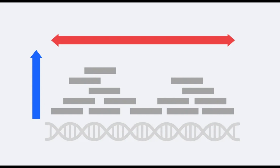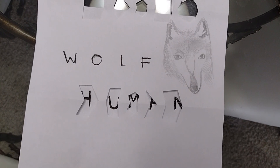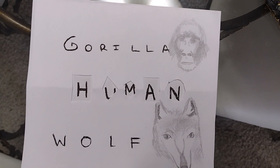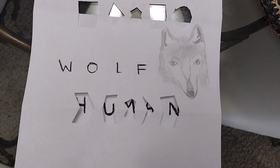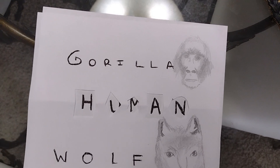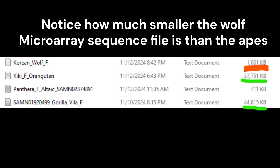This allows for relatively high coverage when creating microarray data files. However, wolves are more distantly related to humans than apes are. Due to the larger genetic divergence, fewer genetic markers on human-focused microarrays will align well with the wolf genome. This lack of genetic overlap means that many probes won't effectively match or capture wolf DNA sequences, resulting in lower coverage. The outcome is a microarray file with fewer data points, making it less comprehensive for wolf genomics compared to what can be achieved for more closely related primates like gorillas or chimps.